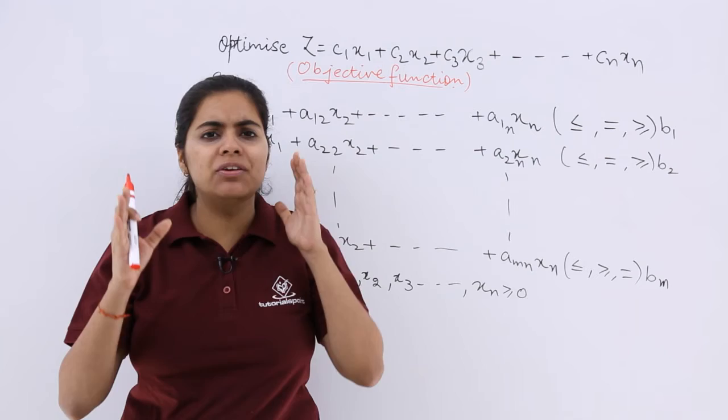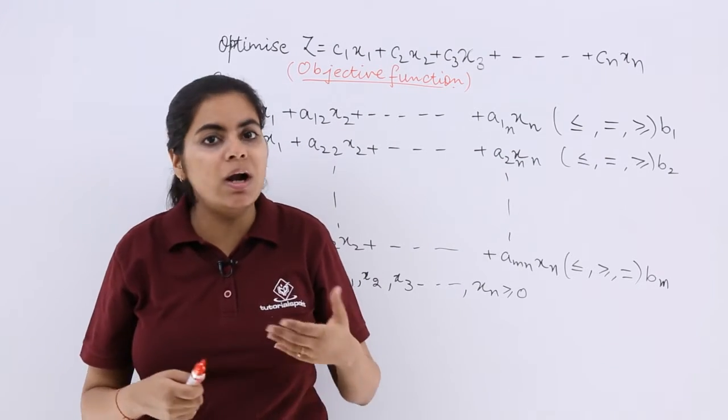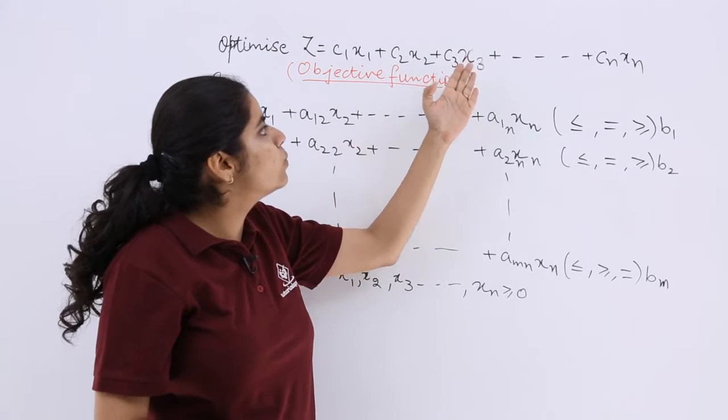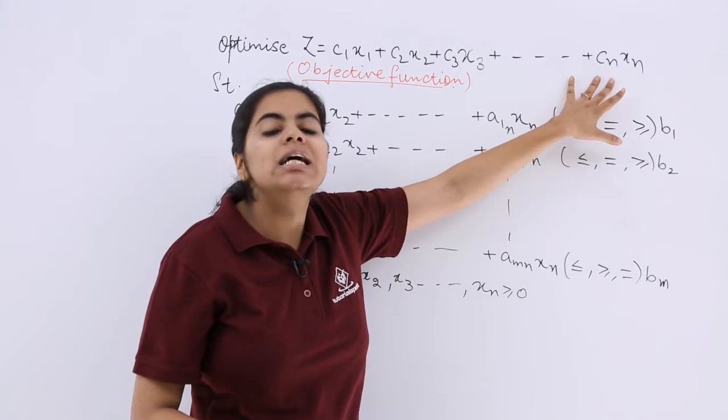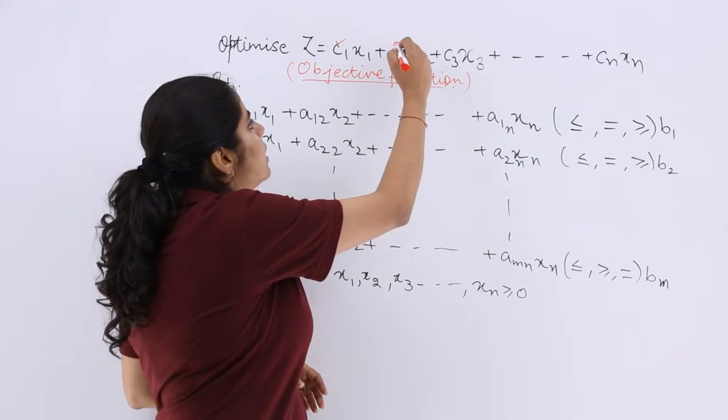So the general description or the general form of this would be: optimize z equals c1x1 plus c2x2 plus c3x3 and so on till cnxn, where c1, c2,